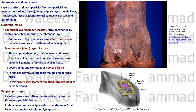Deep to Scarpa's fascia we have the deep adipose layer. Interestingly, its fat cells have different metabolic activity than the superficial layer, and it is the layer preferred by cosmetic surgeons in liposuction. In cross-section you can see Camper's fascia, Scarpa's fascia deep to it, and then the muscle wall.